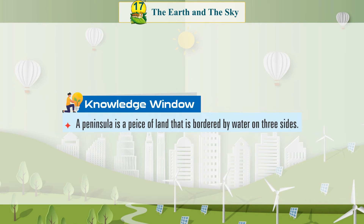Knowledge Window: A peninsula is a piece of land that is bordered by water on three sides.